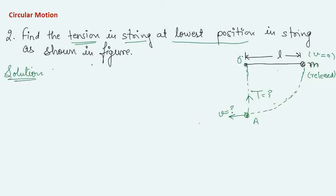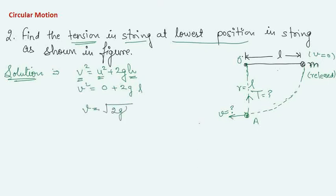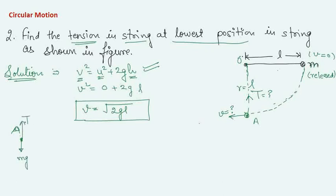Using v² = u² + 2gh, where initial velocity u = 0, and h equals the radius r = l, we get v² = 2gl. So the velocity at the lowest point is √(2gl). We can find this easily without using energy conservation directly. At point A, draw the free body diagram: mg acts downward and tension T acts upward towards the center.